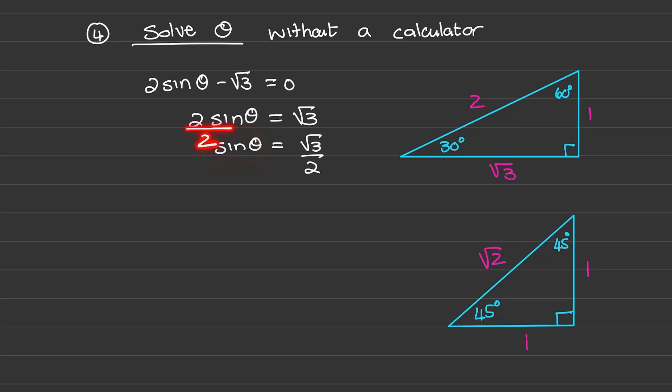divide both sides by 2. So sinθ = √3/2. From this ratio, we can identify that we need the 30-60 degree triangle. This ratio represents opposite over hypotenuse, so in this triangle,